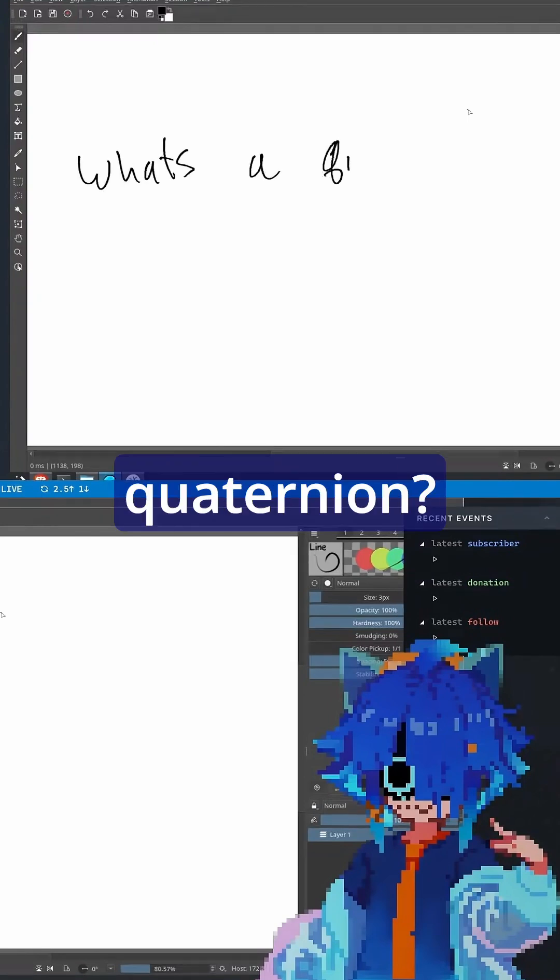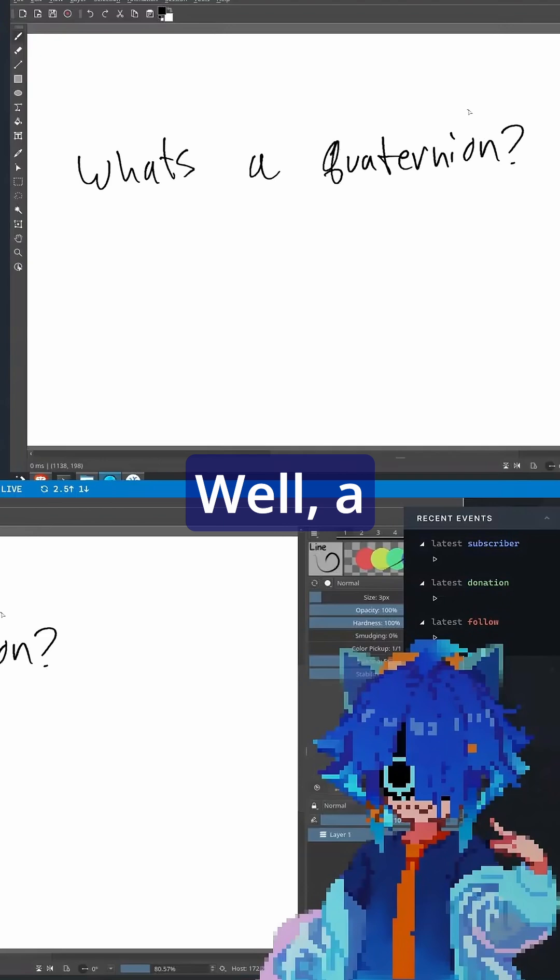What's a quaternion? Well, a quaternion is a way of encoding a rotation.